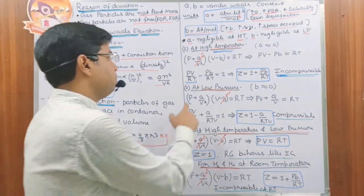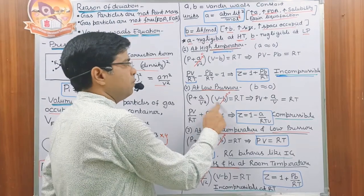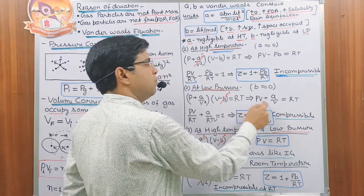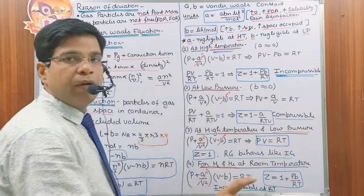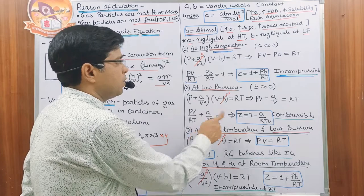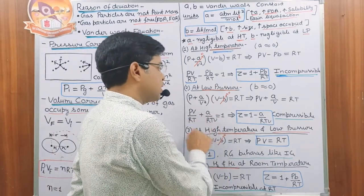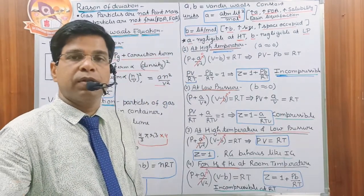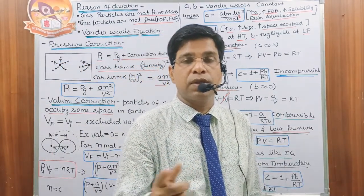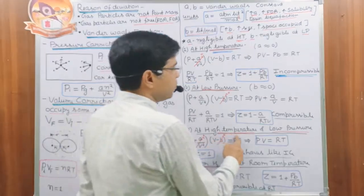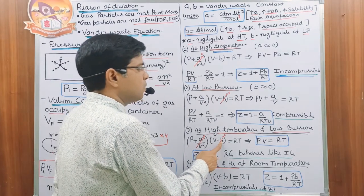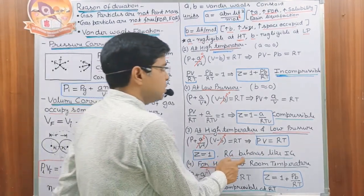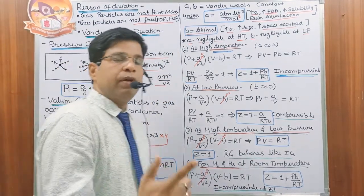At low pressure, neglecting 'b', the Van der Waals equation becomes (P + a/V²)V = RT, giving PV + a/V = RT. Dividing by RT: PV/RT + a/(RTV) = 1, so Z = 1 − a/(RTV). In this case the gas is compressible because Z < 1. When both high temperature and low pressure apply, both 'a' and 'b' are negligible, giving Z = 1, and the real gas behaves like an ideal gas.